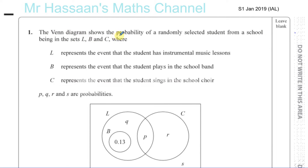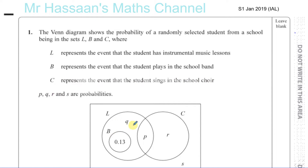The Venn diagram shows the probability of a randomly selected student from a school being in sets L, B and C, where L represents the event that the student has instrumental music lessons, B represents the event that the student plays in the school band, and C represents the event that the student sings in the school choir. P, Q, R and S are probabilities.